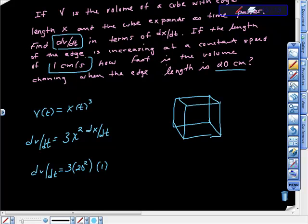So I use this and this 1 here is this 1 right here. Then dV/dt is equal to 1200 centimeters cubed per second.